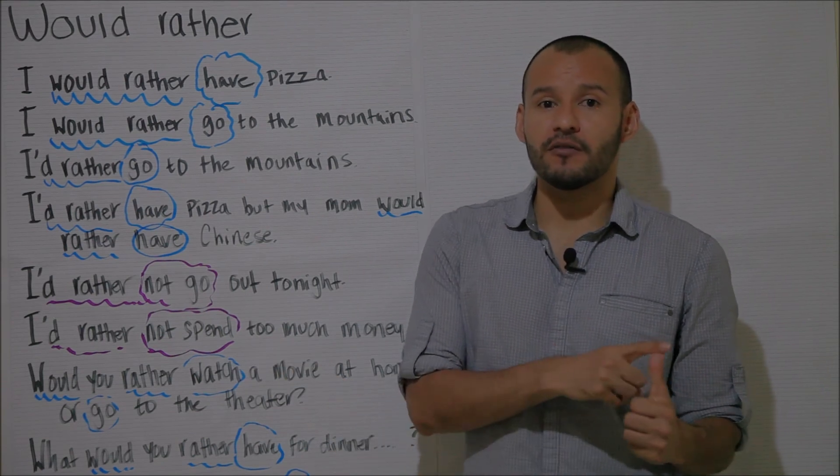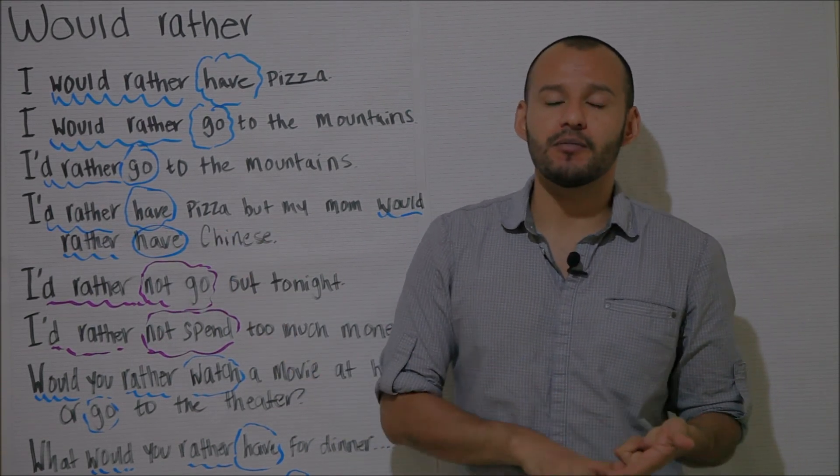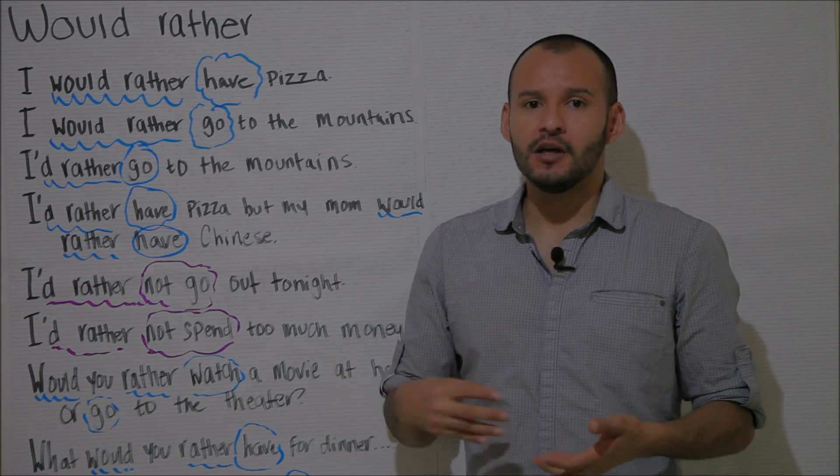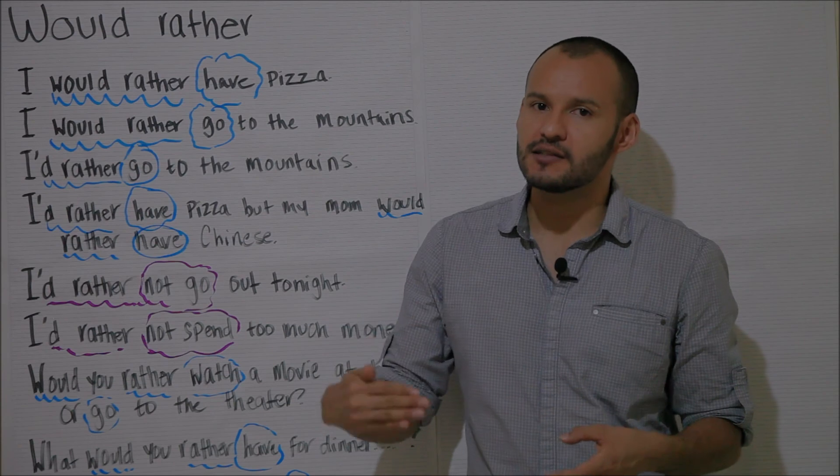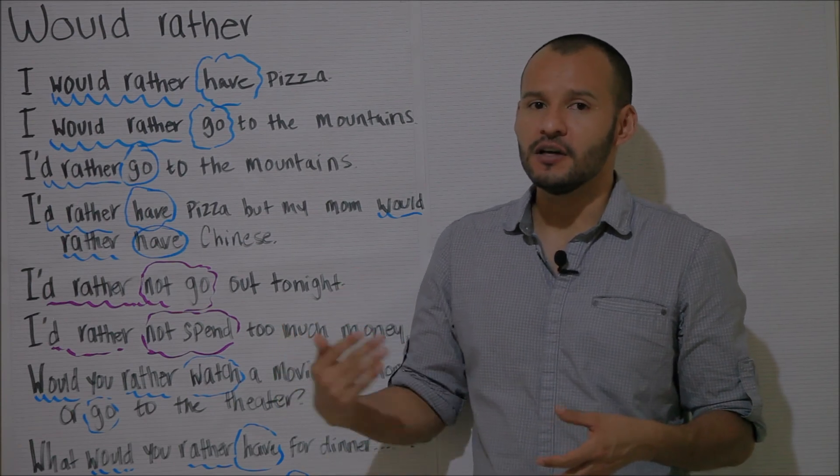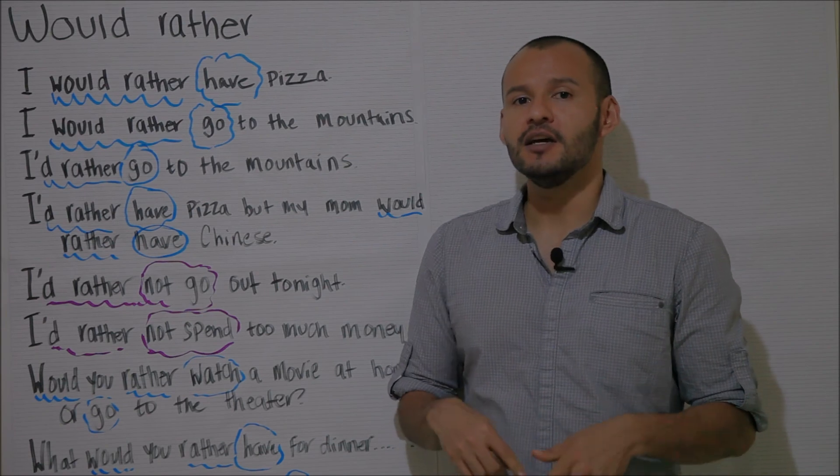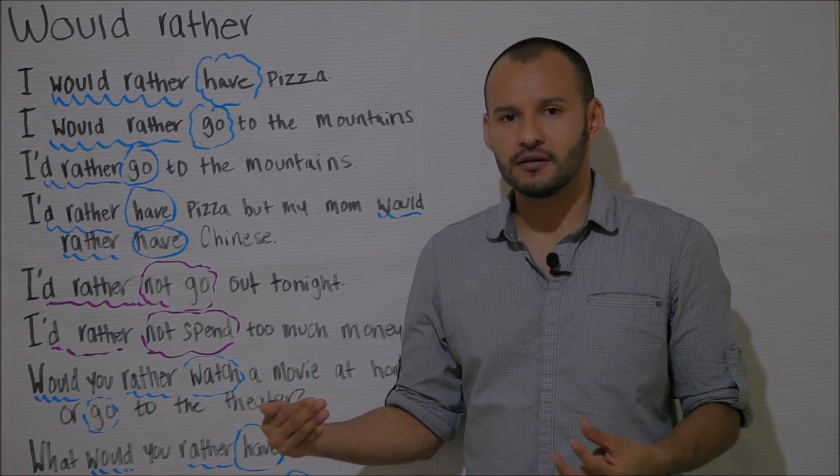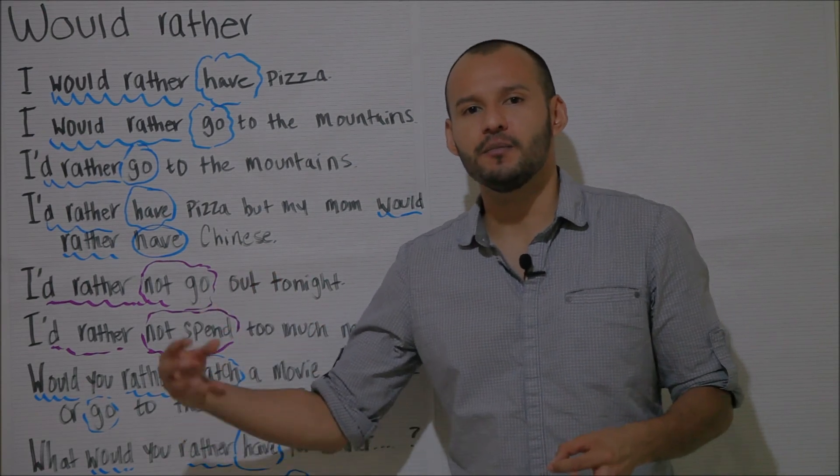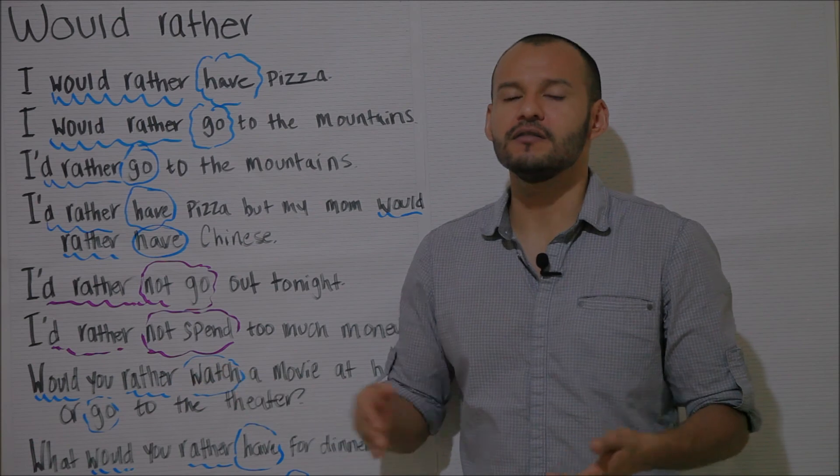So for example, I prefer action movies, I prefer Chinese, I prefer the mountains. With would rather this is not correct. It is necessary for you to use a verb. So I would rather the mountains, no, it's not correct. And I would rather pizza is similarly incorrect. I would rather have pizza. I would rather go to the mountains. The verb is necessary.